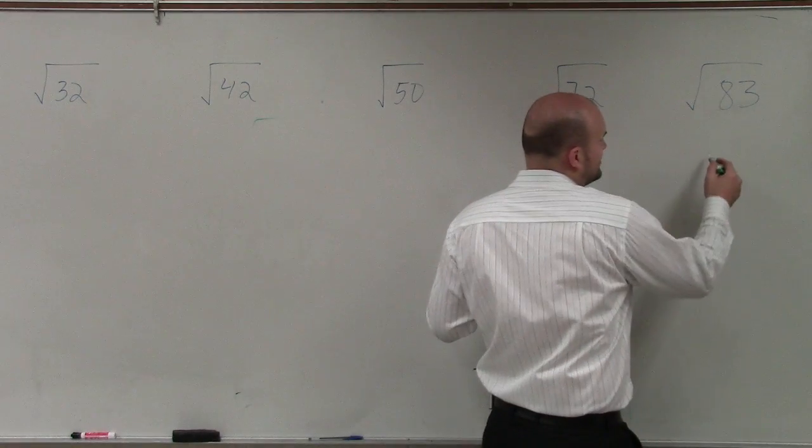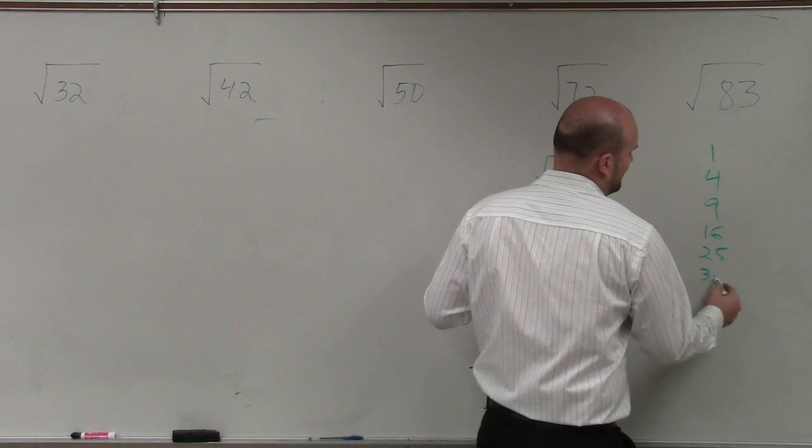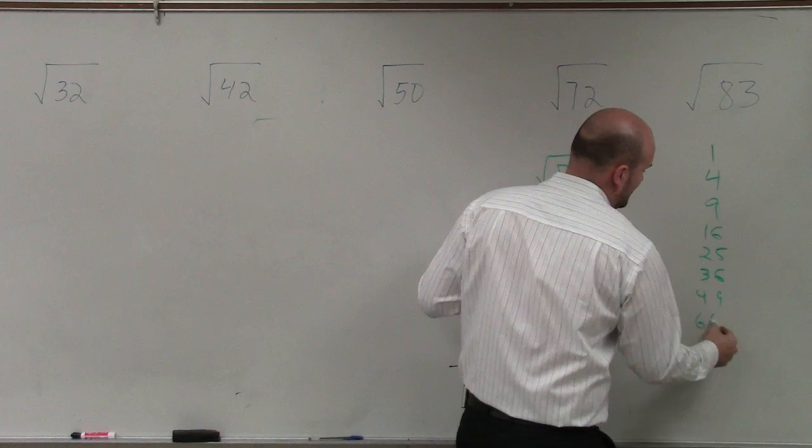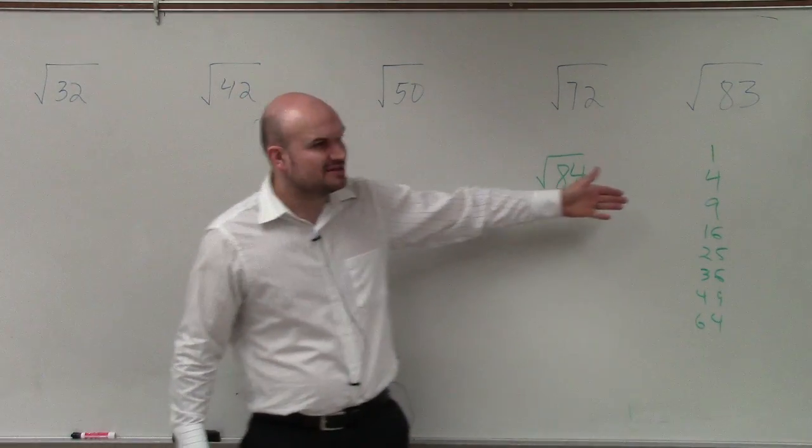So when I look at that, what I do is I look at my square numbers: 1, 4, 9, 16, 25, 36, 49, 64, and keeps on going up and up. And does everybody remember why these are square numbers?